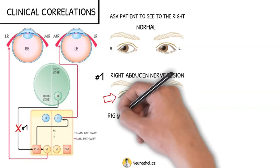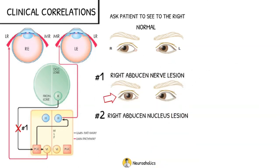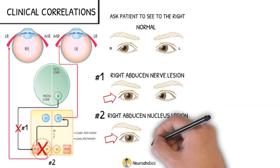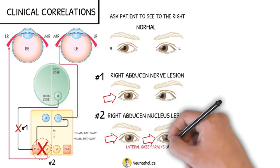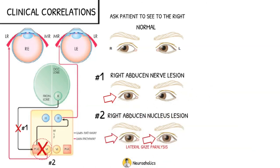If there is a lesion on the right abducens nucleus, which is located within the pontine gaze center or paramedian reticular formation, this is what the eyes look like. Both eyes cannot look to the right or so-called lateral gaze paralysis. And you might see complete right facial paralysis as the right facial nerve is also injured because it is located near the abducens nucleus.